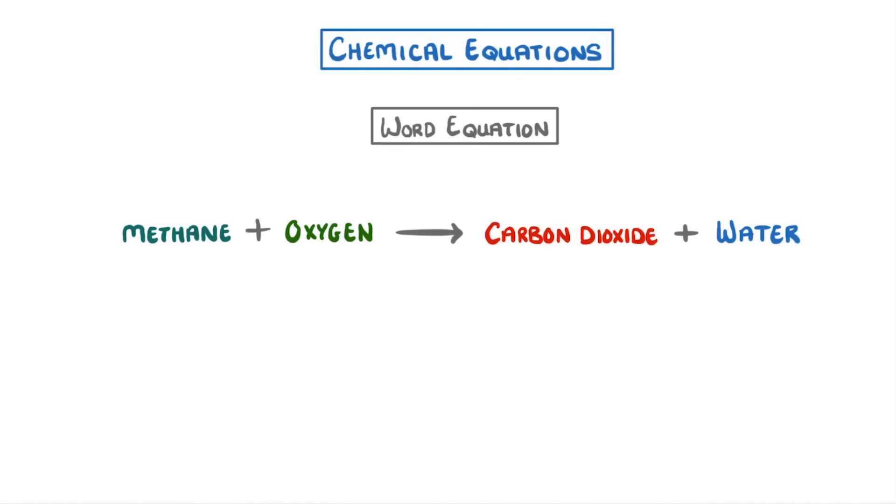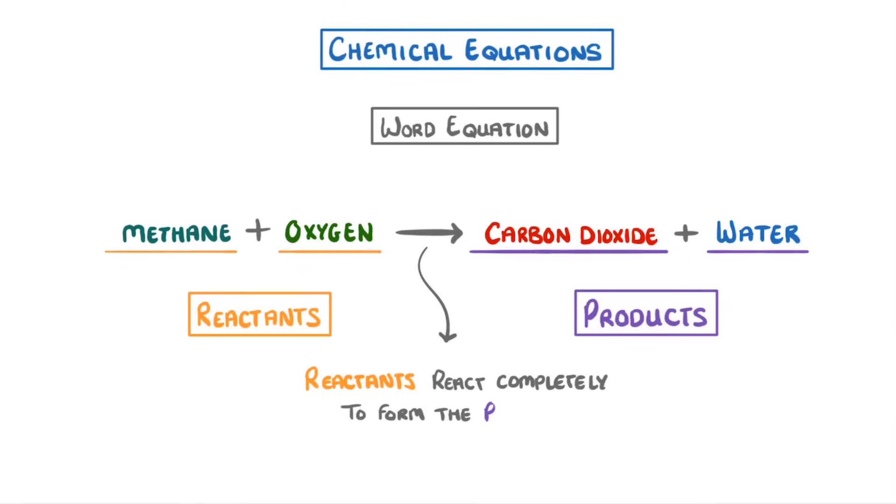On the left-hand side of our equation, we have the methane and oxygen that react together, and we call these the reactants. On the right, we have the molecules that are produced, so in this case carbon dioxide and water, which we call the products. And in the middle, we have a single arrow, to show that the reactants react completely to form the products.